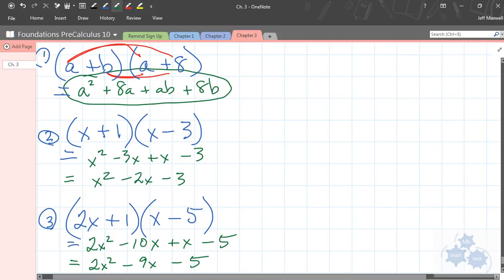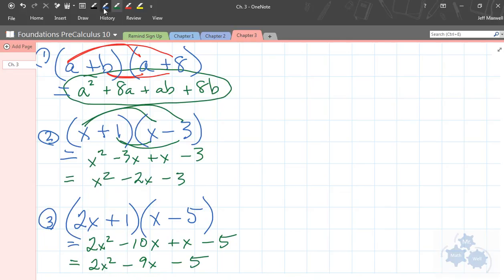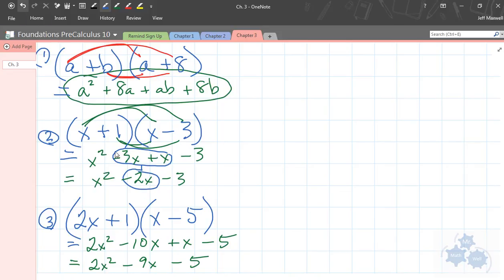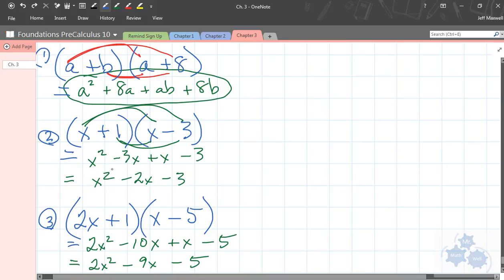x times x, x squared. x times negative 3, negative 3x. 1 times x is x, 1 times negative 3 is negative 3. Like terms? Yes, we should have some like terms right here so we can combine those or collapse those into one term. Right? Negative 3 plus 1. Remember, negative 3 plus 1 is negative 2. We're not multiplying these, we're adding the coefficients, adding the numbers in front. So our final answer here should be right here, x squared minus 2x minus 3. Get that?